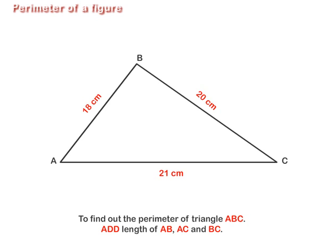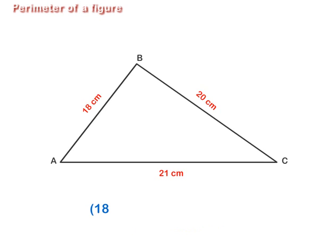add lengths of AB, AC and BC. That is 18 plus 21 plus 20 equal to 59 cm.